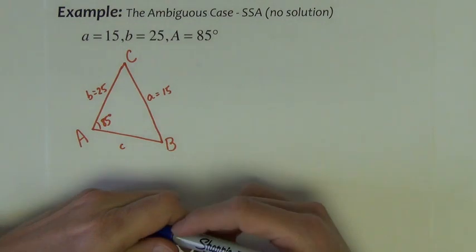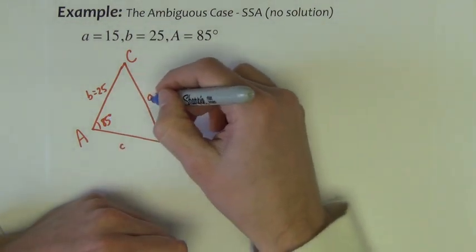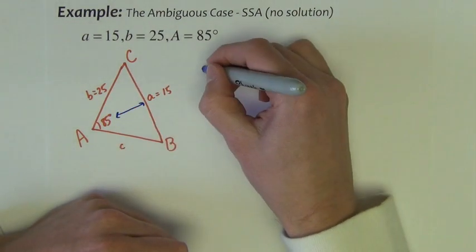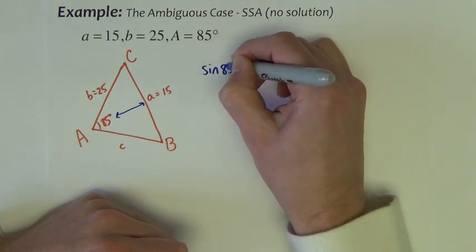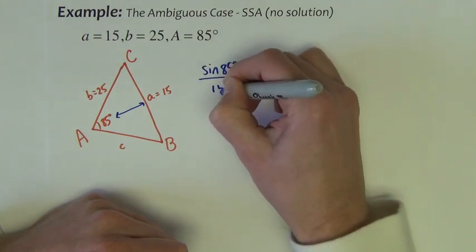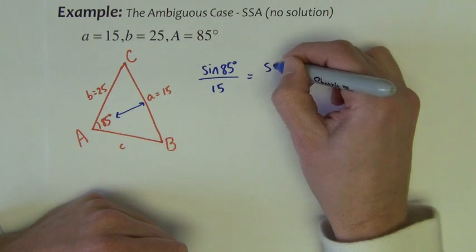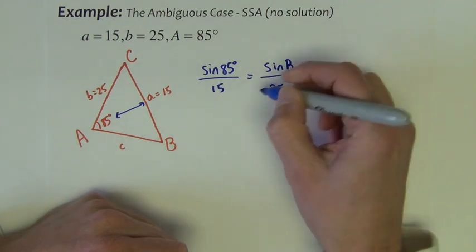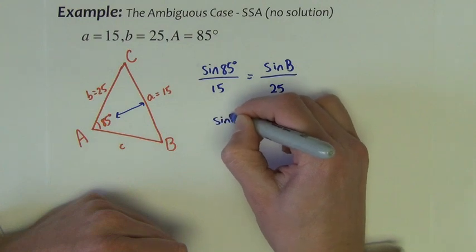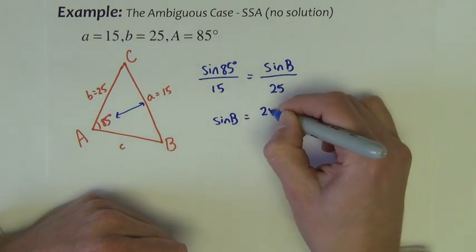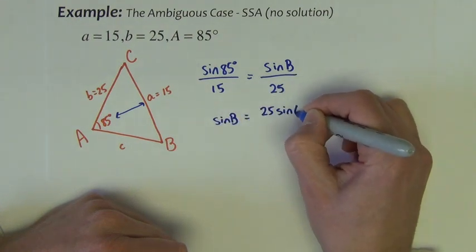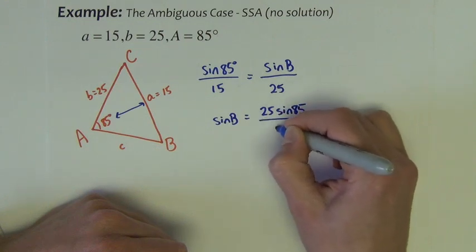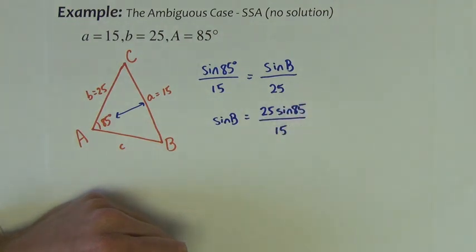If we begin solving this problem, I'm going to obviously use my AA pairing. So we have sine 85 degrees over 15 equals, and we're going to attempt to find angle B because we have little b.